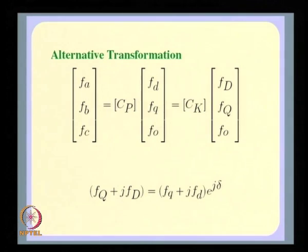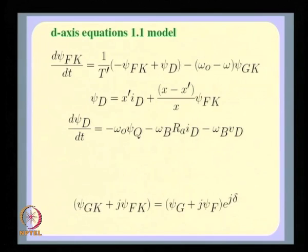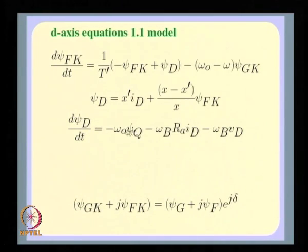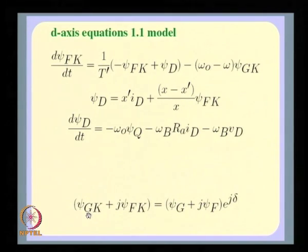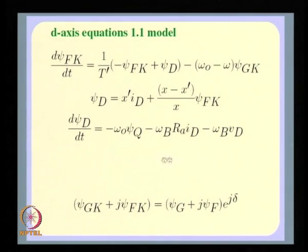Since the rotor angle in an induction machine is an abstraction — there is no saliency in the rotor — it makes sense to reformulate the differential equations not in terms of Park's transformation but in terms of Kron's transformation, which uses ω₀t as the argument of sines and cosines, with ω₀ being a constant. If I reformulate the equations in the capital D-Q frame (Kron's frame), they look similar to before but with ω₀ appearing and new variables ψ_{GK} and ψ_{FK} replacing the old ones.